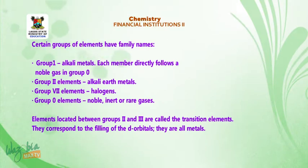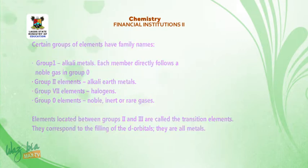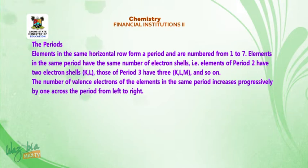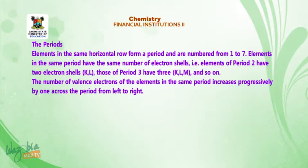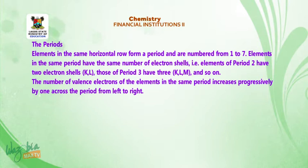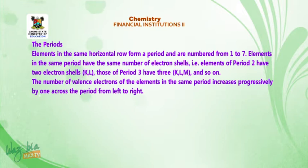Elements in the same horizontal row form a period and are numbered from 1 to 7. Elements in the same period have the same number of electron shells. That is, elements of period 2 have 2 electron shells, K and L; those of period 3 have 3 electron shells, K, L and M, and so on. The number of valence electrons of the elements in the same period increases progressively by 1 across the period from left to right.